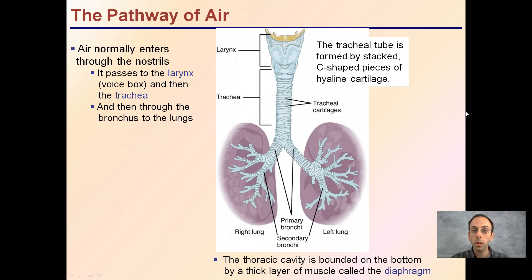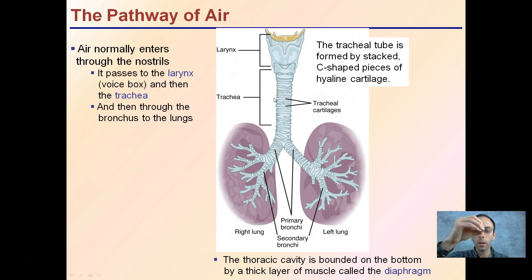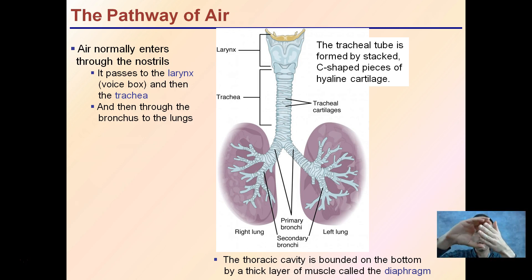Looking a little bit more specifically at the path of air: air normally enters through the nostrils, passes to the larynx — which is here, our voice box — and then to the trachea, and then it goes to the bronchioles of the lungs. The tracheal tube is formed by a stack of C-shaped pieces of hyaline cartilage, meaning they're not solid rings but actually C-shaped, all piled on top of one another, allowing some compression while still holding it open to allow air to exchange.